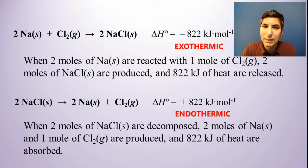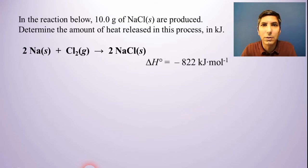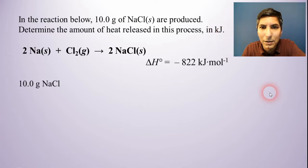Now we're going to use this concept and idea of stoichiometry and the recipes for producing products along with delta H to solve a couple stoichiometry problems. Here's the first one. It says in the reaction below, 10.0 grams of sodium chloride solid are produced. Determine the amount of heat released in this process in kilojoules. We have the same reaction we started with. I'm going to write down 10 grams of sodium chloride as my starting value, and the question asks me to determine how much heat is released in kilojoules. In our stoichiometry process, what's the first step?